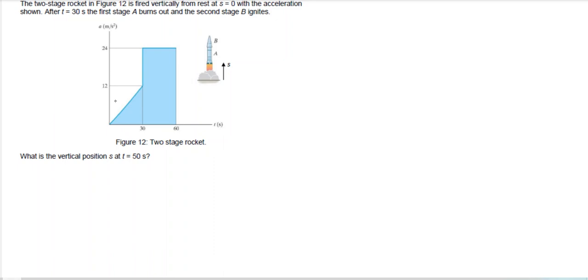The thing is that the acceleration for the first 30 seconds is just linear, and the acceleration here from 30 to 60 seconds is just constant. What we want to find out is the position or how far it has gone to the sky after 50 seconds.